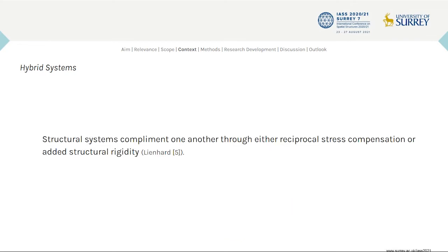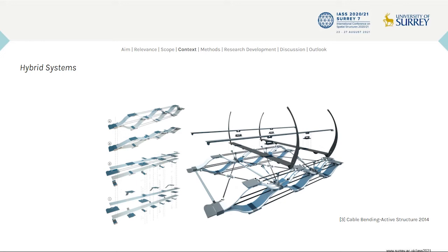Hybrid systems consist of two or more subsystems that complement one another through either reciprocal stress compensation or added structural rigidity. The system we propose combines bending active plates with a tensile system. One example is the cable bending active structure completed at the University of Cyprus, which employs a pair of parallel linear strips and a secondary tensioning system. A single tensioning system was used to pre-stress and stabilize multiple modules, limiting achievable global forms to linear configurations.